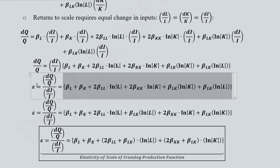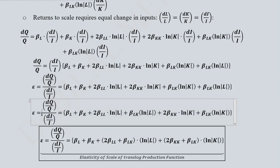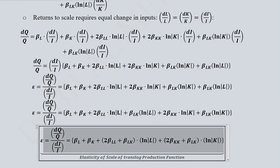Which actually is showing the elasticity of scale because it is the percentage change in output due to the percentage change in the inputs. So finally this is the result and we can say that this is the elasticity of scale for a Translog production function.